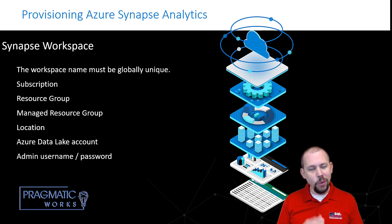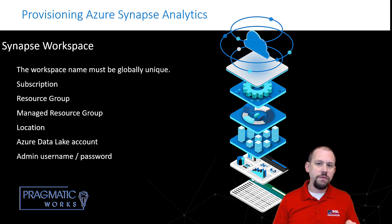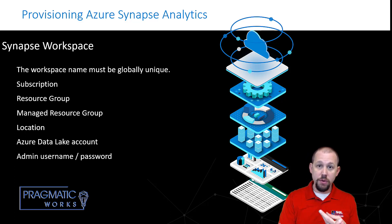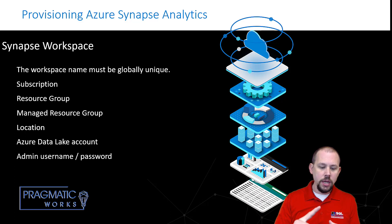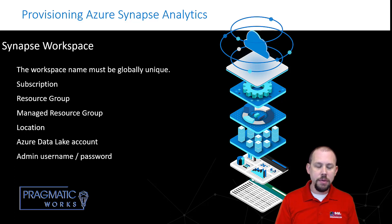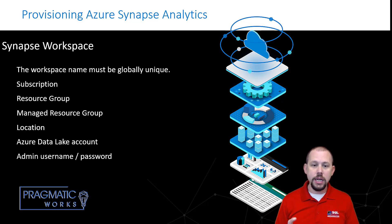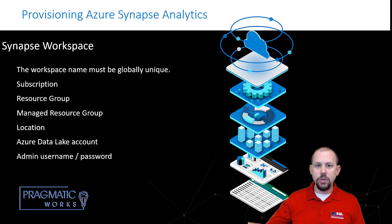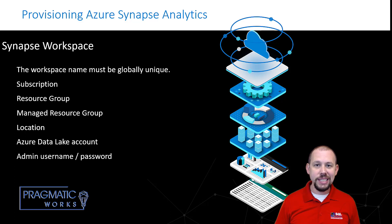Location is very important for really three primary reasons. One, performance — reducing the amount of latency when moving data between data centers. Two, security — if you keep resources in the same location, it's easier to use a virtual network on top of them. And three, cost — there's actually an egress charge for moving data from a data lake in one region to somewhere else. So: location, location, location — you've heard it in real estate, and now you've heard it in Azure Synapse Analytics.